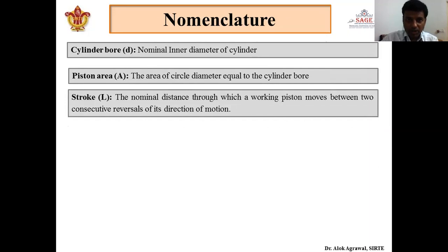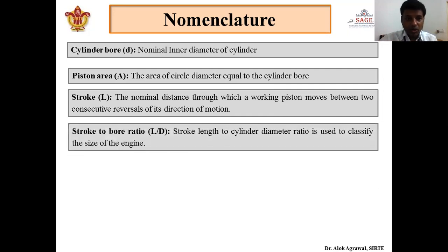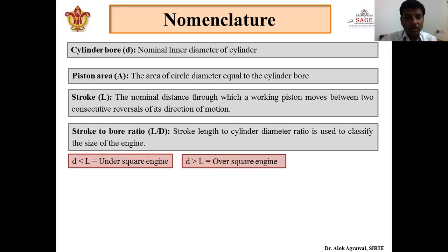Next is stroke — an important term. It is the nominal distance through which a piston moves between two consecutive reversals, i.e., when the piston moves from the topmost position to the bottommost position. Next is the stroke-to-bore ratio. Bore is the nominal inner diameter d, and stroke is l. The ratio l/d is called the stroke-to-bore ratio, and on this basis we decide the size of the engine. If d is smaller than l it is called an under-square engine; when d is greater than l it is called an over-square engine; and when d equals l it is called a square engine.